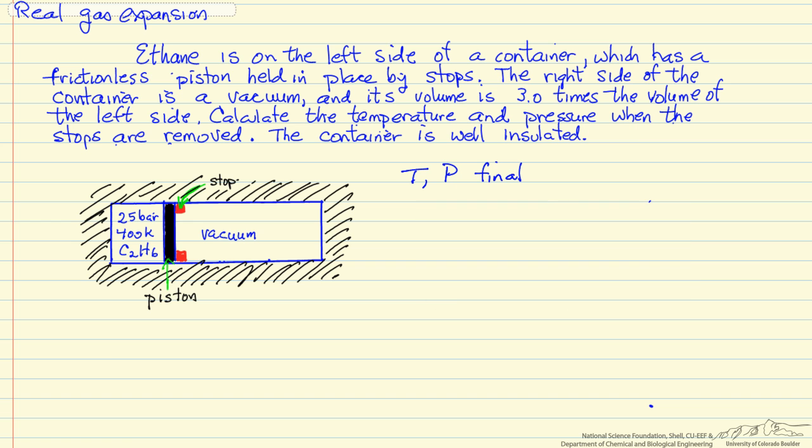We want to treat this as a real gas, and we're given that the volume of this vacuum region is three times the volume on the left side of the container. This is a closed system, so we can apply the first law for a closed system, meaning no mass transfer in and out.